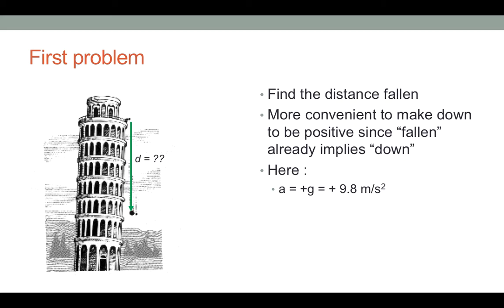If we made down to be negative, we'd end up with a negative distance, and the distance fallen might be minus 30 meters. That would be a double negative and would sound like the object actually fell upward. To avoid that confusion, simply make down to be positive, and then the acceleration is plus g, or plus 9.8 meters per second squared.